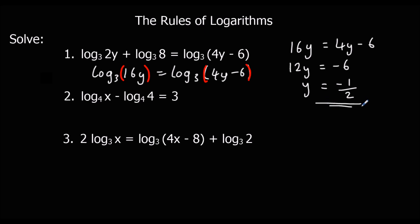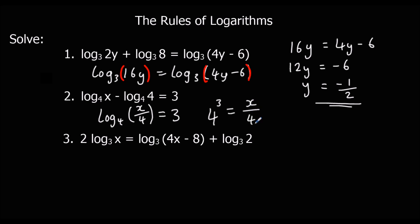Practice question two: two logs with the same base subtracted means we divide the answers, giving log base 4 of (x/4) equals 3. Converting out of log form: 4 cubed equals x over 4. Since 4 cubed is 64, we get 64 equals x/4, and multiplying by 4 gives x equals 256.